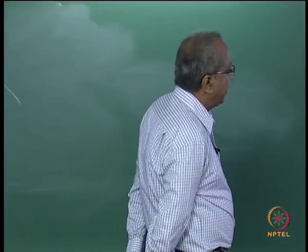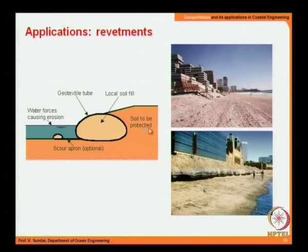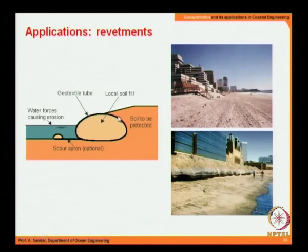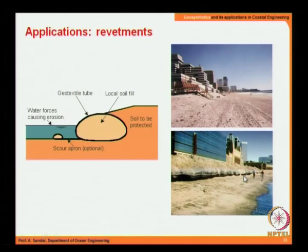For revetment application, the geotube is installed with local soil fill. An apron is also very important and must be anchored by scour protection, which ensures no loss of sand because it acts as a filter medium. Hence this process provides the kind of protection measure shown here.